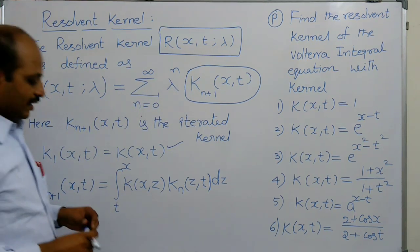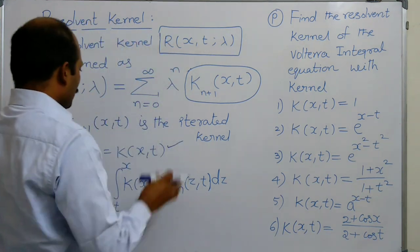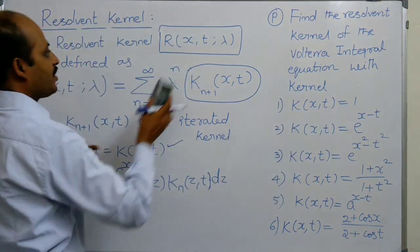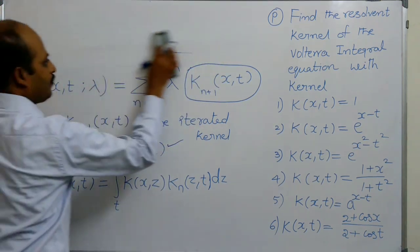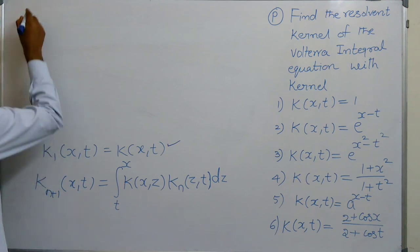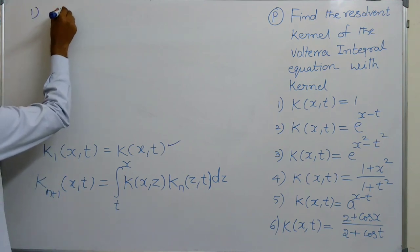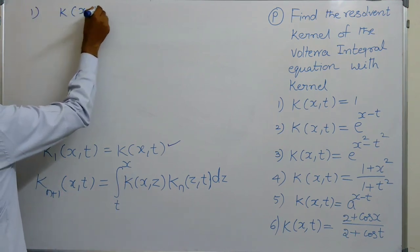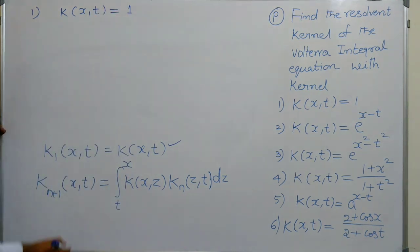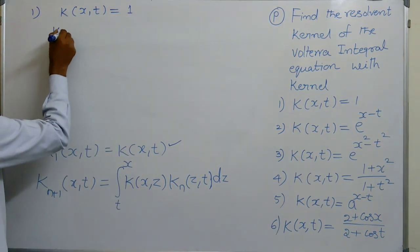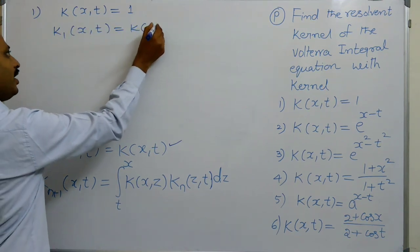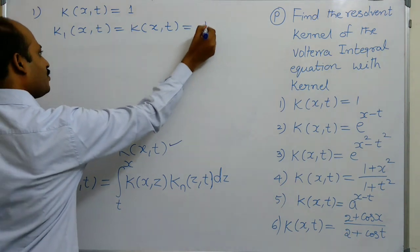Let us try to find the resolvent kernel when K of X, T is equals to 1. Given that K of X, T is equals to 1. So K1 of X, T is clearly K of X, T, which is equivalent to 1.